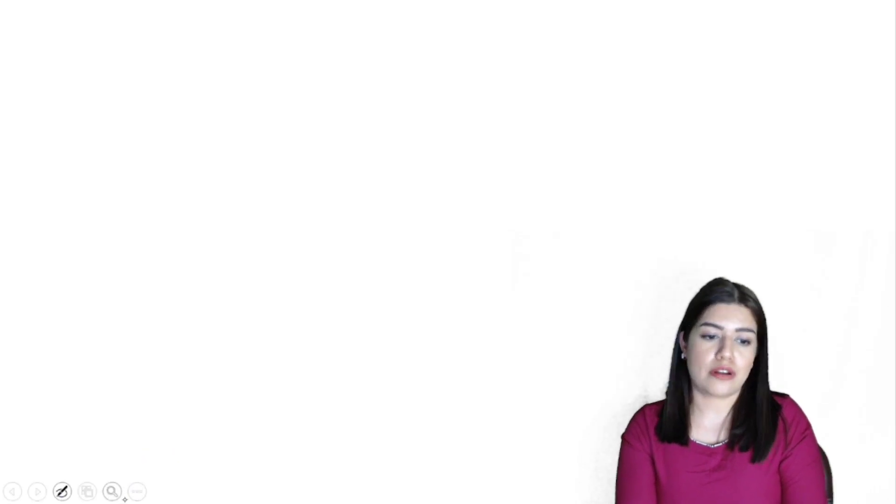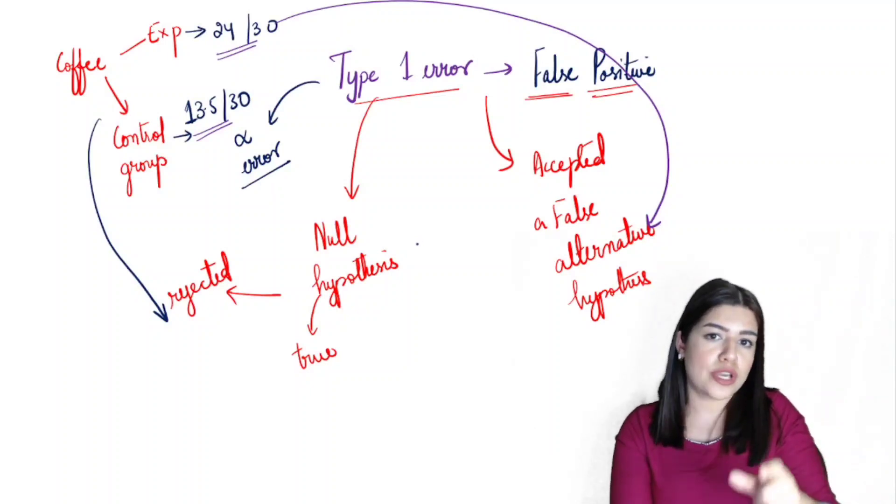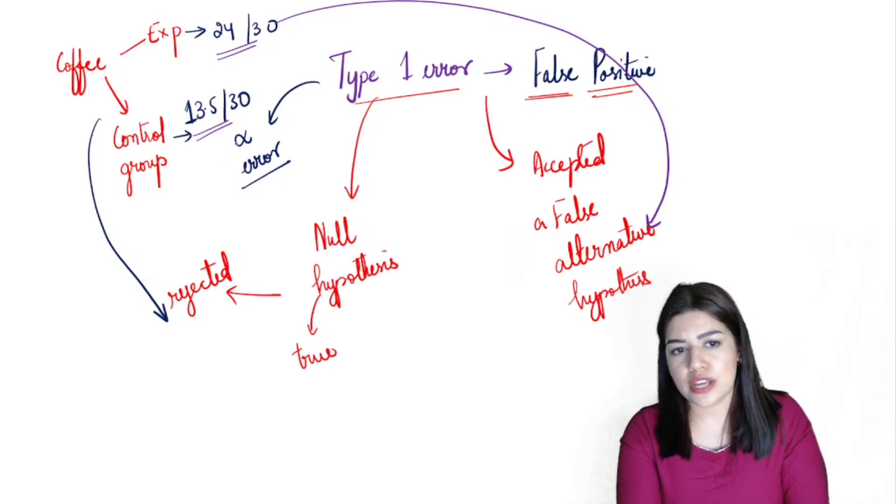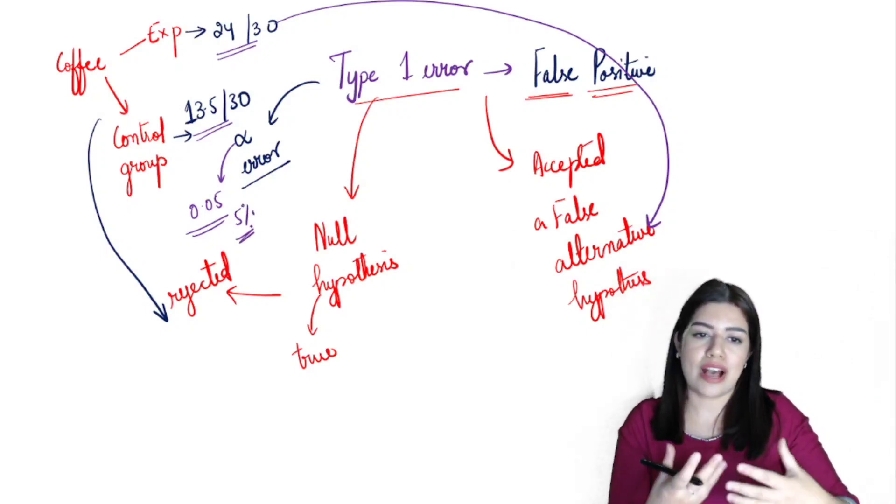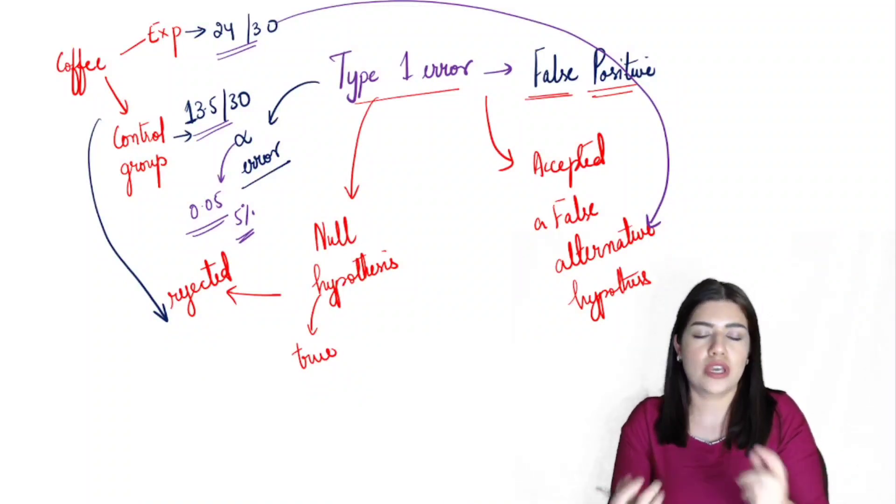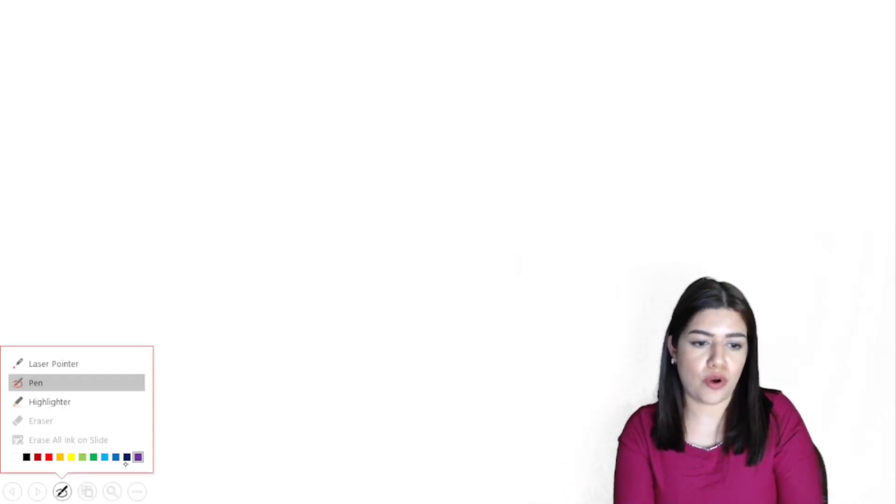Now we should move on to the Type 2 error. I hope the Type 1 error was clear for you. The chances of rejecting a true null hypothesis also indicate the chances of committing a Type 1 error. So whenever you see that your alpha value is 0.05, that means there is a 5% chance of you truly having rejected a correct null hypothesis. Let's move on to Type 2 error.